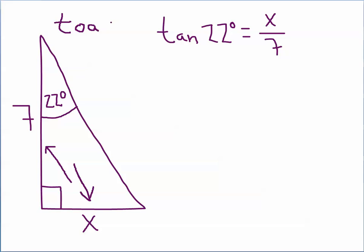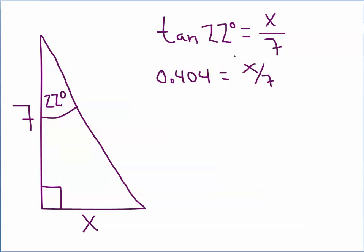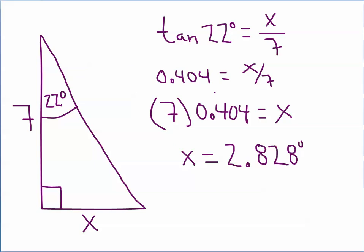The word I gave you to help you remember is TOAD. The first three letters of TOAD is TOA — so the tangent is the opposite divided by the adjacent. The tangent of 22 degrees, correct to three decimal places, is 0.404, and we know that equals x divided by 7. To solve for x, multiply both sides by 7 — the 7 in the denominator cancels out — and x is equal to 2.828 units long.